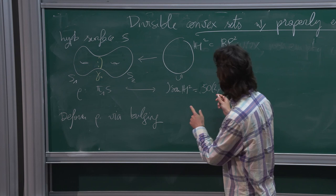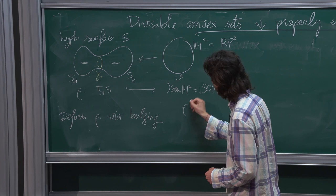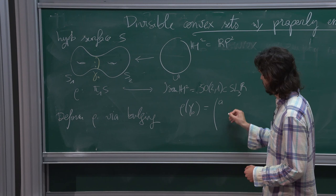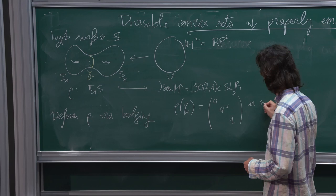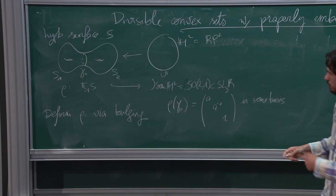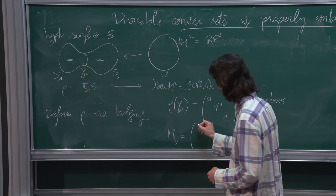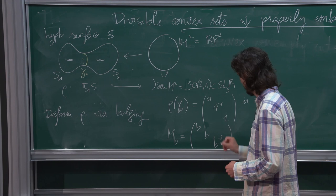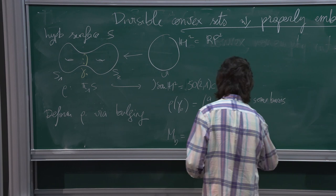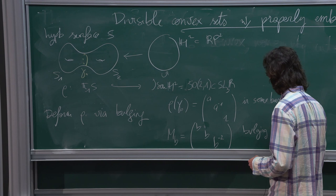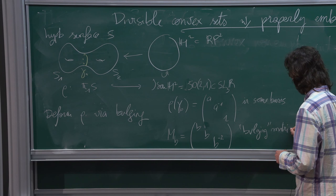For this, we will need a basic fact from hyperbolic geometry, which says that ρ(γ₀) is diagonalizable — we can write it as a diagonal matrix in some basis. And now we choose an element that commutes with ρ(γ₀): a bulging matrix. We choose the following matrix: diag(b, b, b⁻²), with bulging parameter b. The term 'bulging' will become understandable later on.